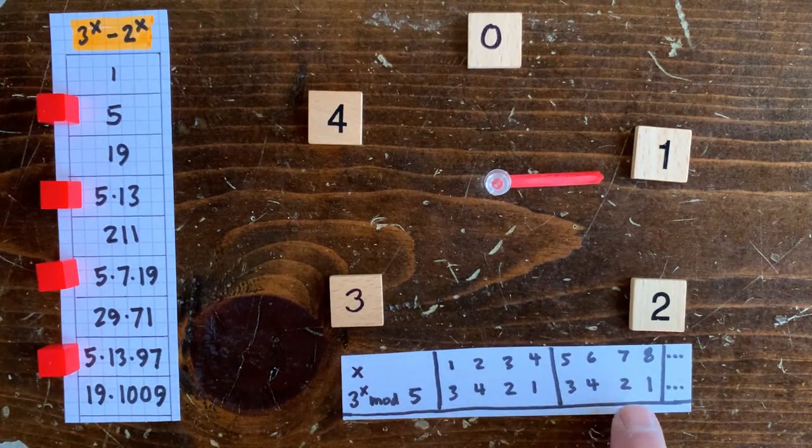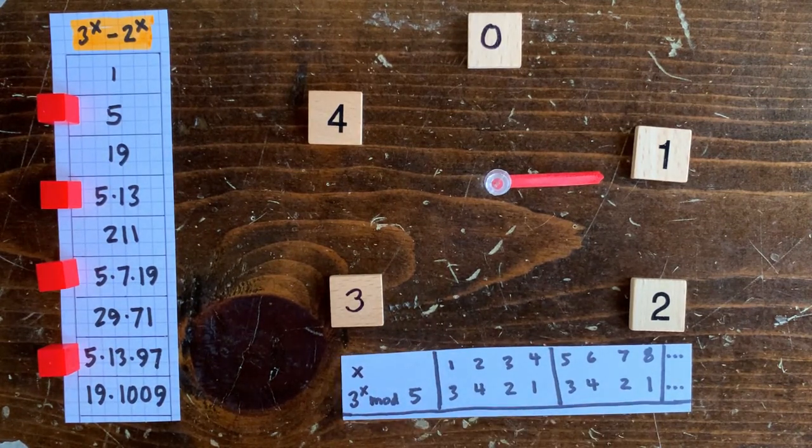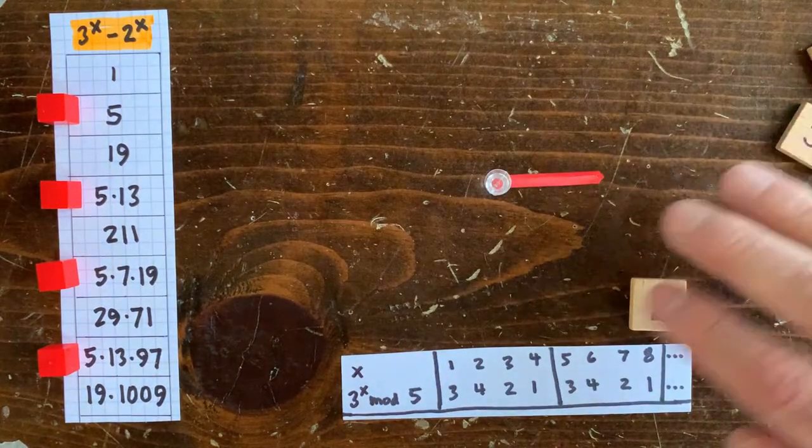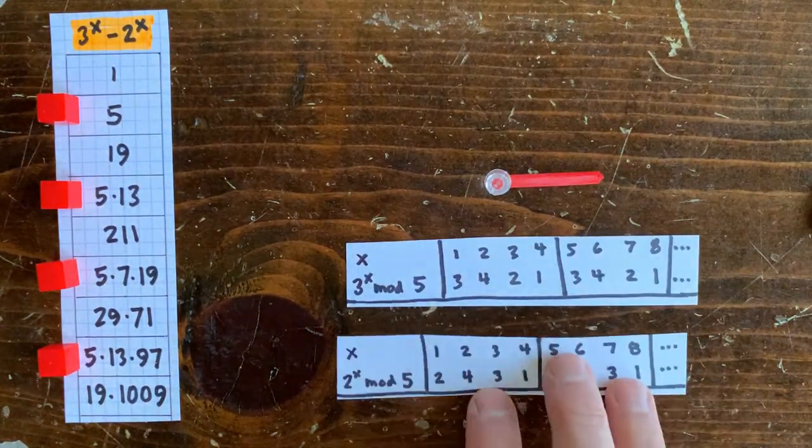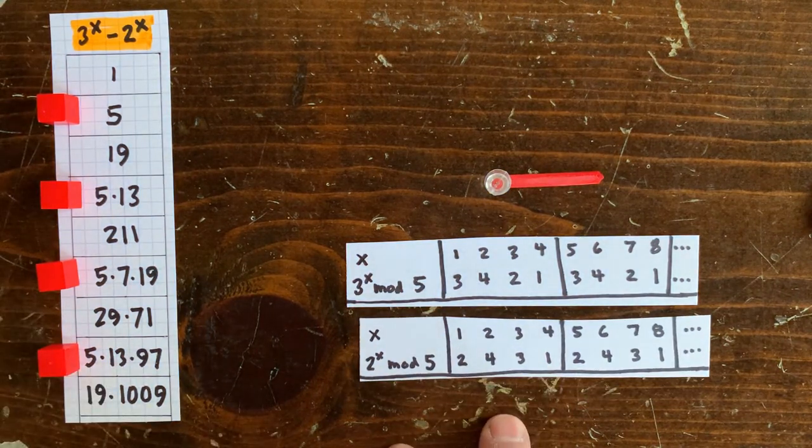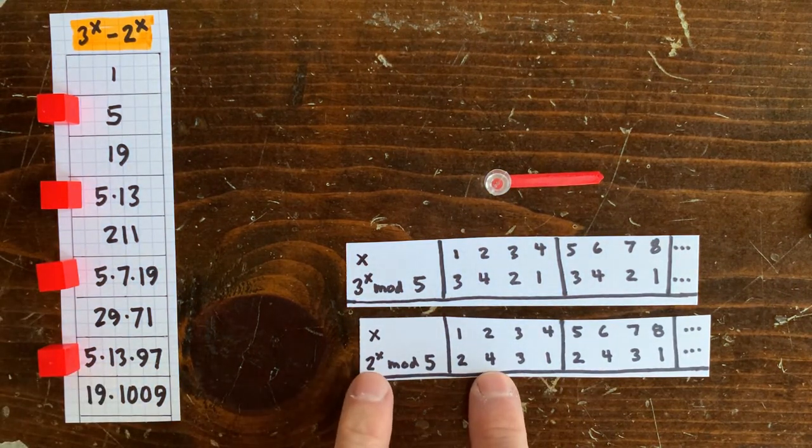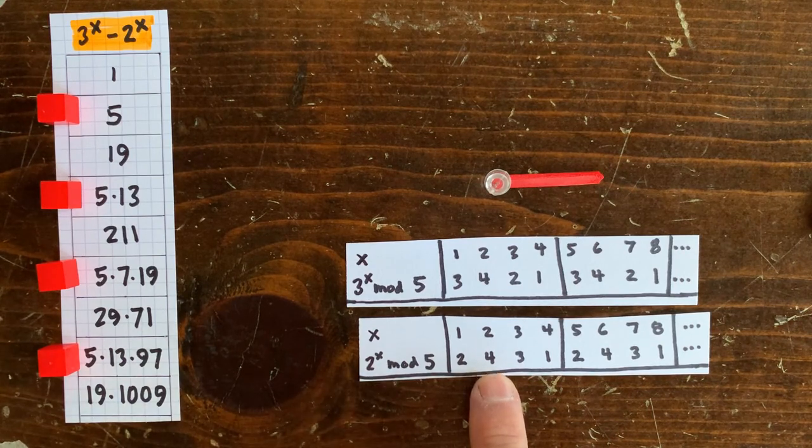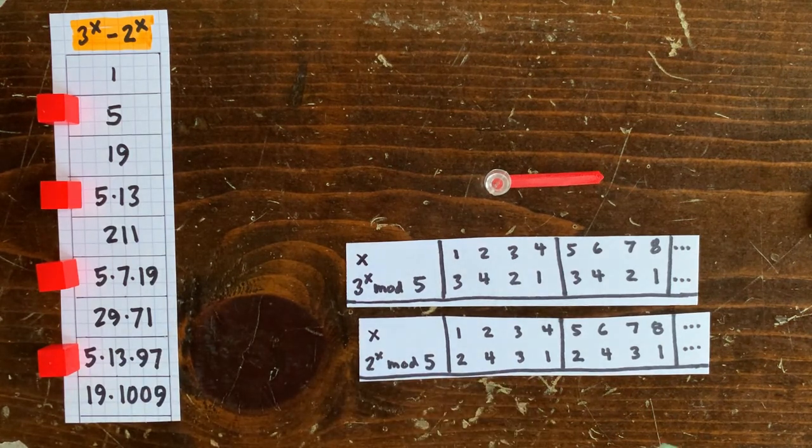Neither of these are ever going to be divisible by 5, but if you take 3 to the x minus 2 to the x, sometimes it will be. If the 2 clocks on the 2 planets show exactly the same time, then we know that we're divisible by 5 because they have the same remainders when you divide them by 5.